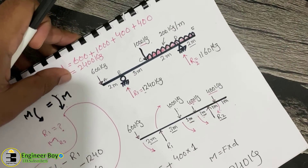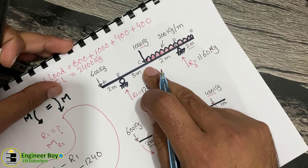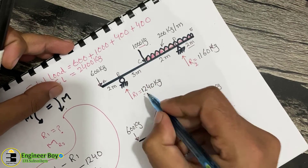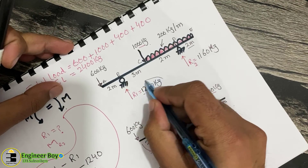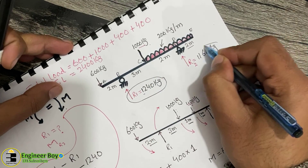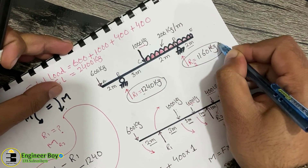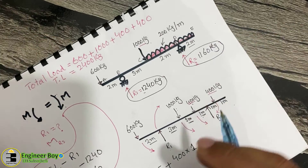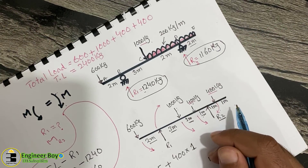The support reactions of the double overhanging beam have been calculated: R1 = 1240 kg and R2 = 1160 kg. See you in the next video.